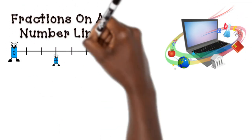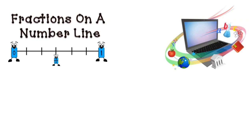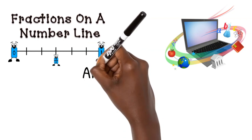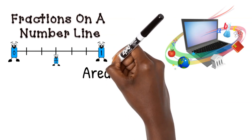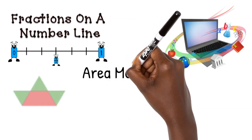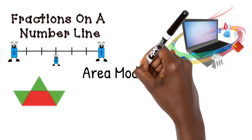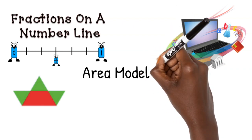The next thing we can do is incorporate area models. Using area models and other equal sets to represent fractions really helps students understand that fractions need to have equal parts. This is a key area that helps, because it will keep them from looking at a figure and incorrectly saying that a red portion is one-fourth when the parts aren't equal.